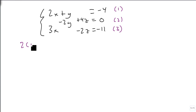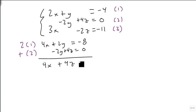So we're going to take 2 times equation 1 and add equation 2. So 4x plus 2y equals minus 8. Minus 2y plus 4z equals 0. Gives us 4x plus 4z equals minus 8. Something that's really nice to do, if you can, is to reduce it. So we get x plus z equals minus 2.